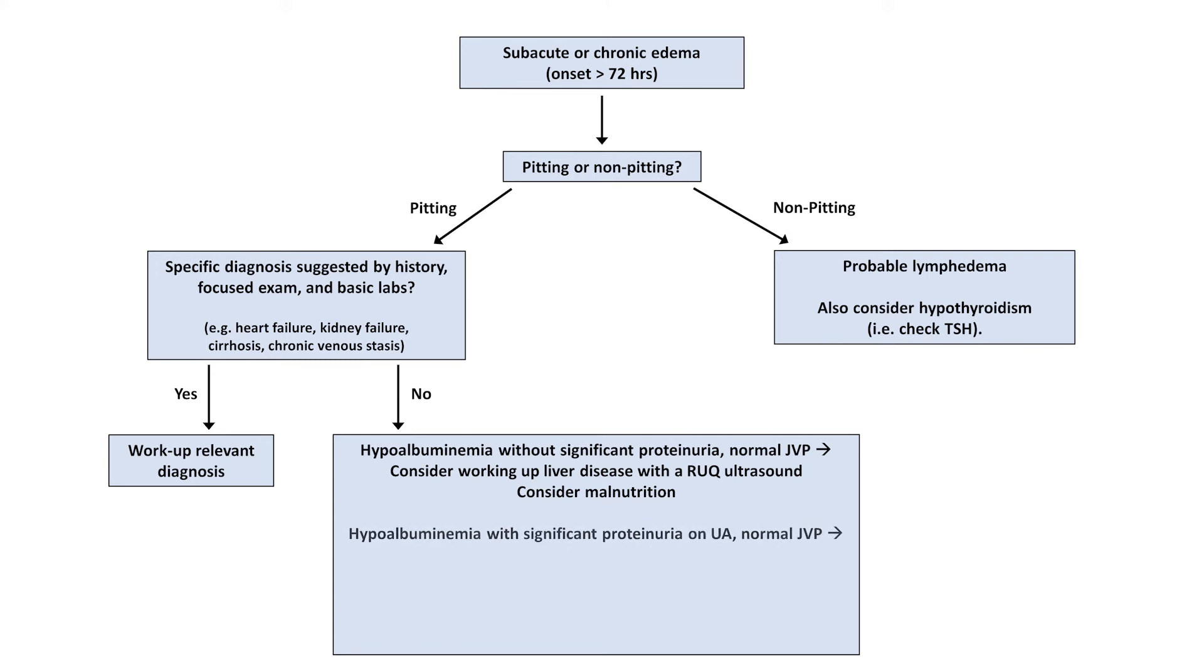If albumin is low, but there is significant proteinuria on UA dipstick, quantify the proteinuria with a 24-hour urine collection and work up possible nephrotic syndrome. And if the albumin is normal or near normal, but JVP is elevated, check an echo to evaluate for heart failure and pulmonary hypertension.